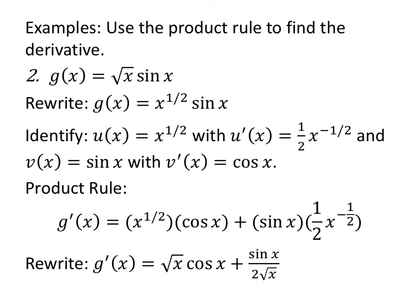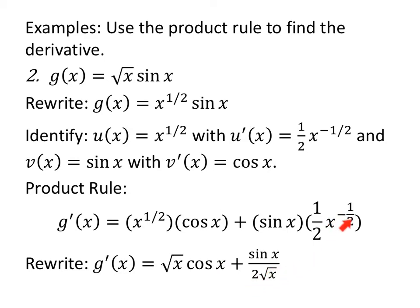Let's use the product rule to find the derivative of g(x) = √x · sin(x). I'm going to rewrite it using rational exponents: x^(1/2) times sin(x). My first function u(x) is x^(1/2) and its derivative is (1/2)x^(-1/2). My second function v(x) is sin(x) and its derivative is cos(x). Putting these together, the product rule gives: x^(1/2) · cos(x) plus sin(x) · (1/2)x^(-1/2). I'll rewrite x^(1/2) as √x times cos(x). The x^(-1/2) means go to the denominator with a square root, so we get sin(x) over 2√x. Started with a radical, finish with a radical.